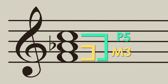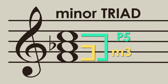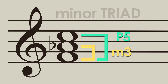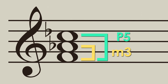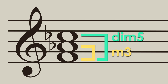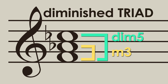If we lower the third a half step, it's now a minor third, and the triad with a minor third and a perfect fifth is called a minor triad. If we also lower the fifth a half step, it's now a diminished fifth, and a triad with a minor third and a diminished fifth is called a diminished triad.